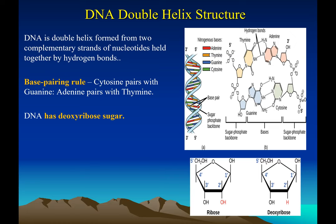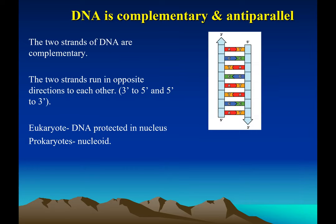If you number the carbons one through five, the second carbon is missing an oxygen in DNA — that's why it's called deoxyribose sugar. RNA has that oxygen. DNA is a double-stranded molecule; it looks like a twisted ladder and is held together by complementary base pairing — A with T and G with C. The two strands are held together by hydrogen bonds.